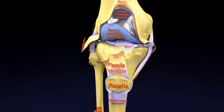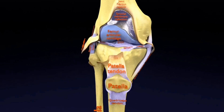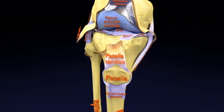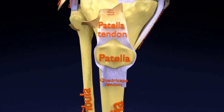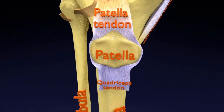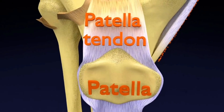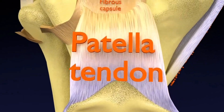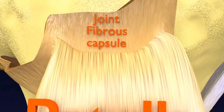It is formed by articulations between the patella, femur, and the tibia. The knee joint consists of two articulations: tibiofemoral and patellofemoral types.